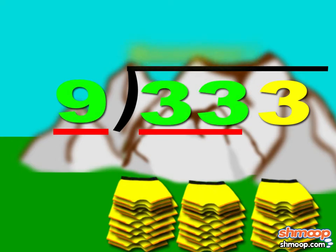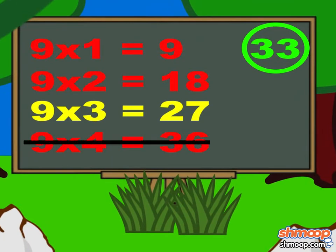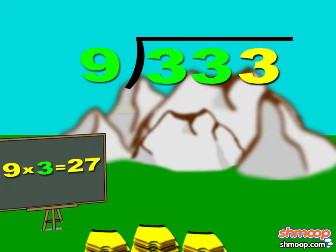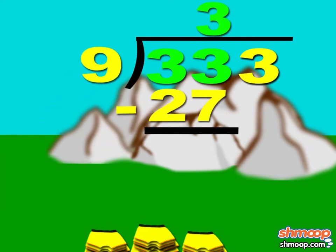That means our quotient, or answer, will start above the second digit, or the tens place. We can't do nine times four, because that's more than 33, and we'd break our rule. So, subtract 27 from 33, and that leaves us with a remainder of six.